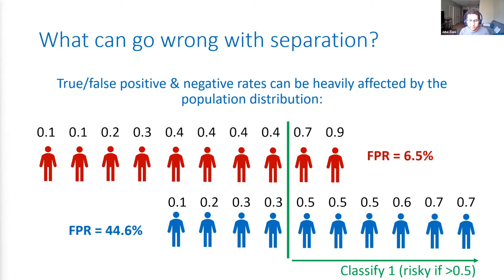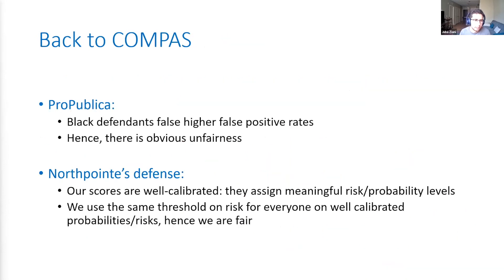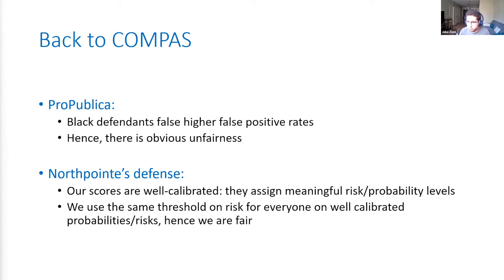The false positive and false negative rates are not always super informative, and that was actually the defense that Northpointe — the people behind the COMPAS algorithm — made when ProPublica showed that Black defendants had much higher false positive rates. Northpointe said: that's a result of different population distributions. Our scores are very well calibrated — they assign very meaningful risk levels — and we're using the same threshold on risk for everyone on well-calibrated probabilities. So we are fair, there is no problem.